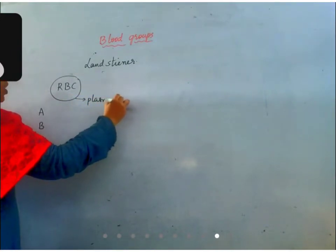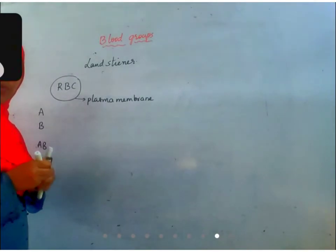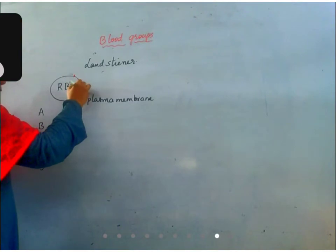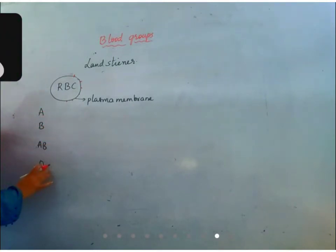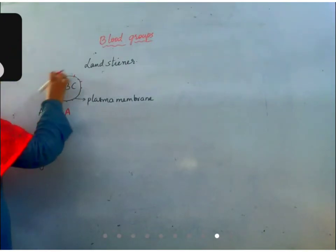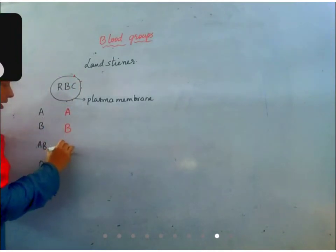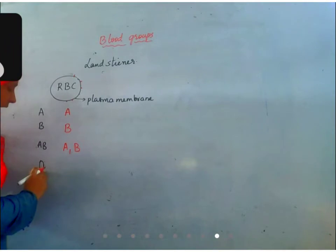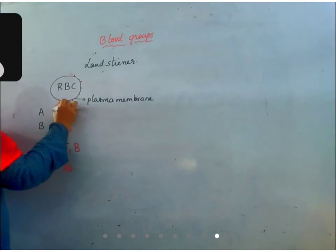This is the plasma membrane of RBC. On the plasma membrane of RBC, every plasma membrane has proteins embedded in it, and based on those proteins, blood is grouped into four different types: A, B, AB, and O. Blood group A has protein A on the plasma membrane. Blood group B has protein B. AB blood group has both A and B, and O blood group has no proteins.